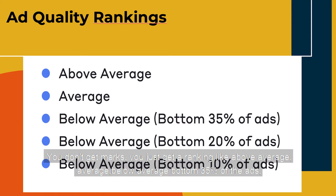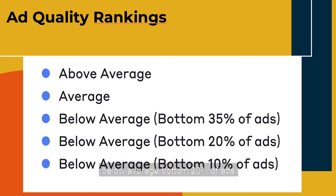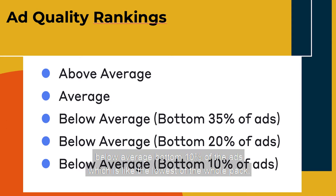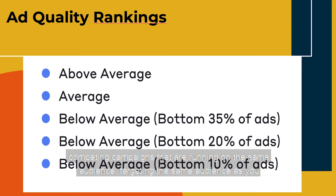You don't get marks — you get a ranking: above average, average, below average bottom 35% of ads, below average bottom 20% of ads, or below average bottom 10% of ads, which is the lowest. These are rankings showing how your campaign performs compared to other competing campaigns running on the same audience targeting at the exact same time.